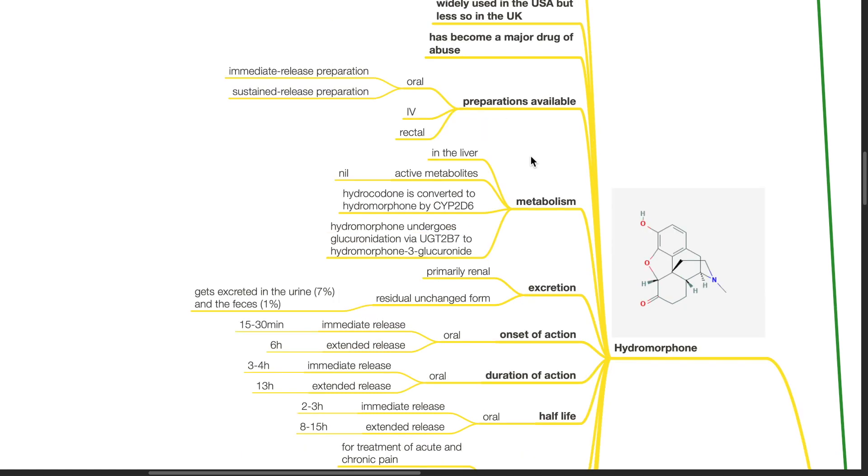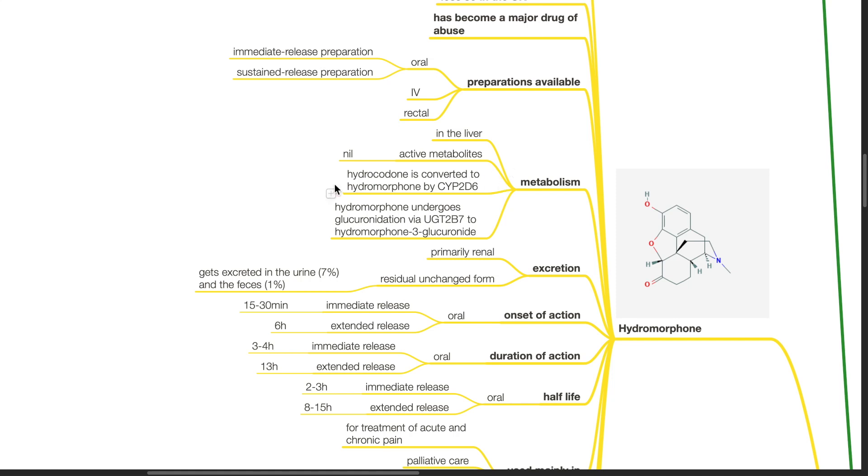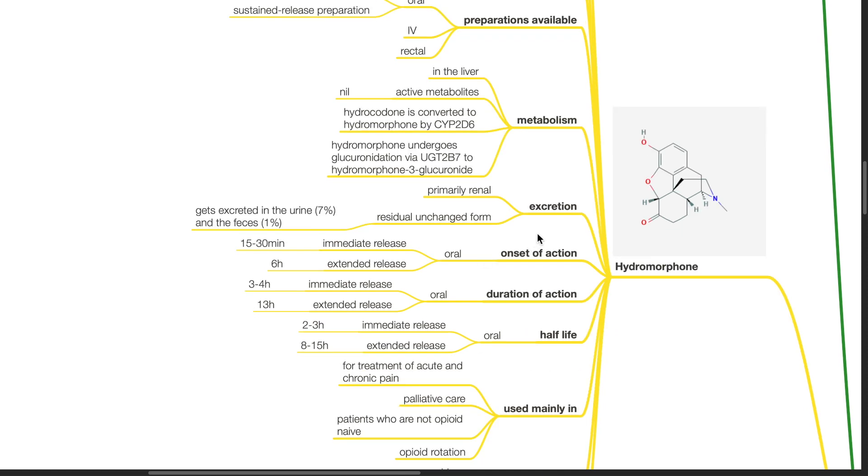Hydromorphone is metabolized in the liver with no active metabolites. Hydrocodone is a prodrug and is converted to hydromorphone by CYP2D6. Hydromorphone undergoes glucuronidation via UGT2B7 to hydromorphone-3-glucuronide. Excretion of hydromorphone metabolites are primarily renal. Residual unchanged form gets excreted in the urine, 7%, and faeces, 1%.